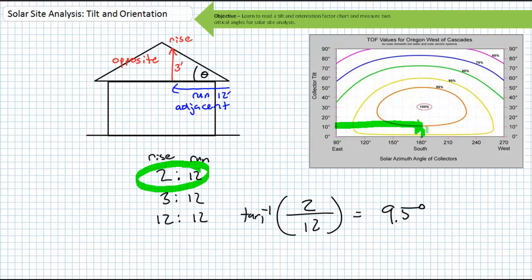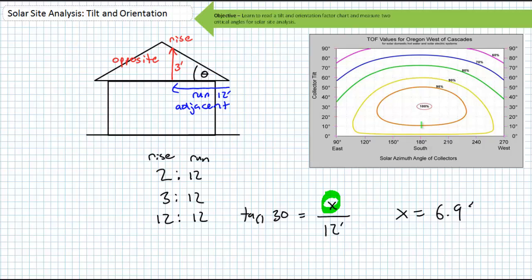You could get tricky and you could determine what rise would give you the perfect 30 degree tilt. Just assume a run of 12 and take the tangent of 30. Solving for our unknown rise, we'll find it's close to 7 feet, so you need to do this 7 over 12 pitch roof. Not exactly standard pitch.